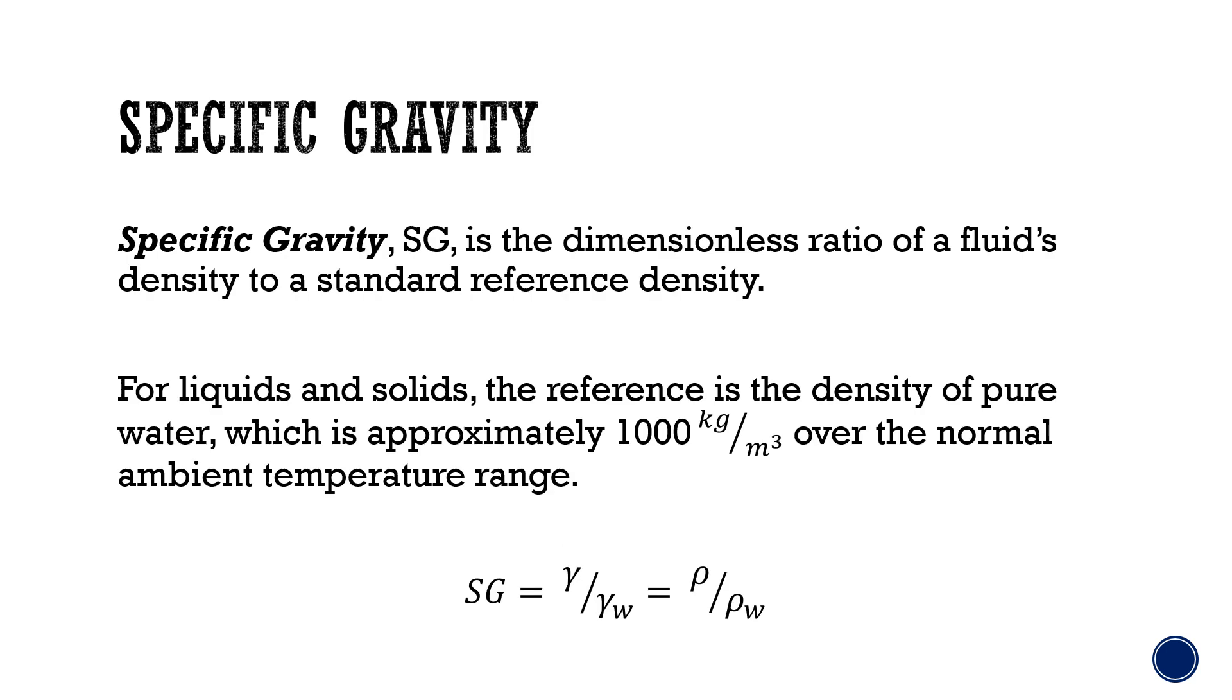Specific gravity is given the symbol SG for short. It is the dimensionless ratio of a fluid's density to a standard reference density. For liquids and solids, the reference is the density of pure water, which is approximately 1000 kilograms per meters cubed over the normal ambient temperature range.